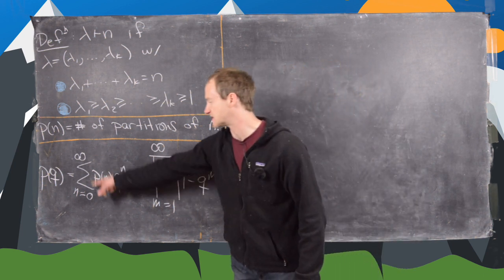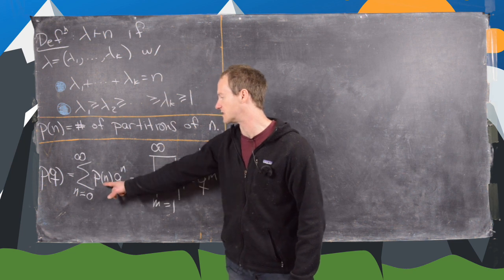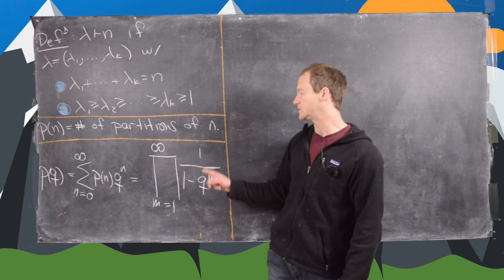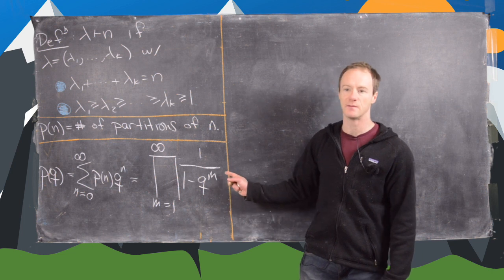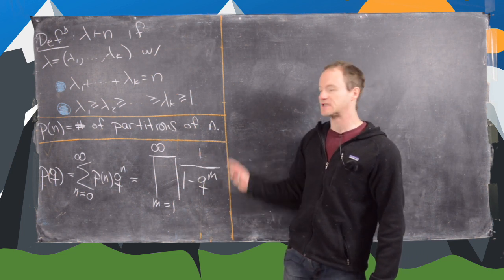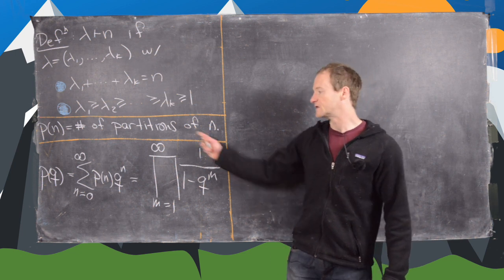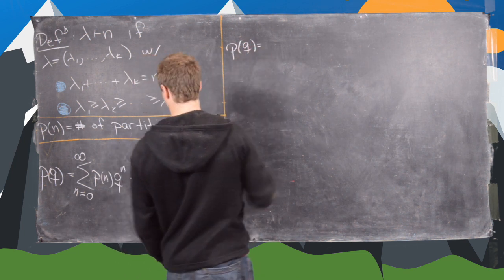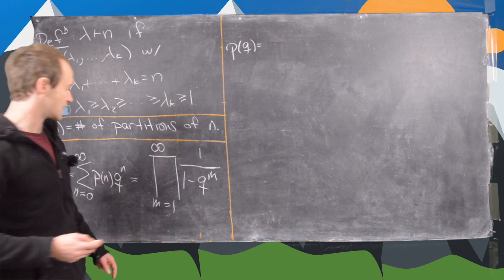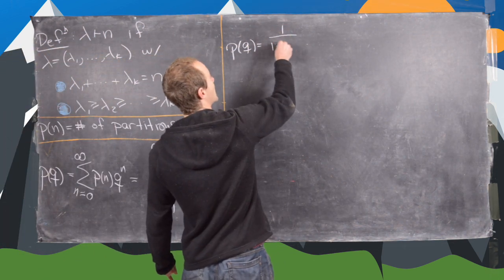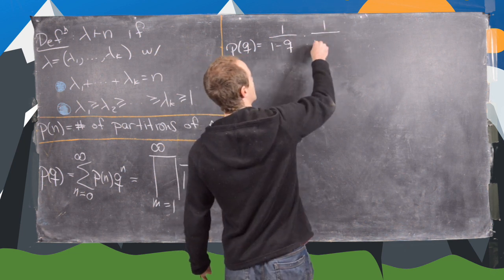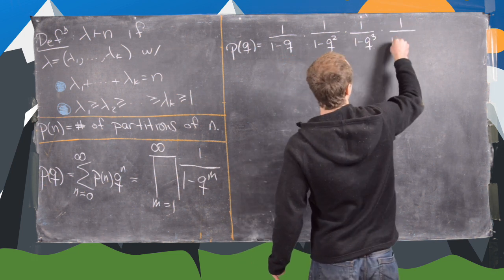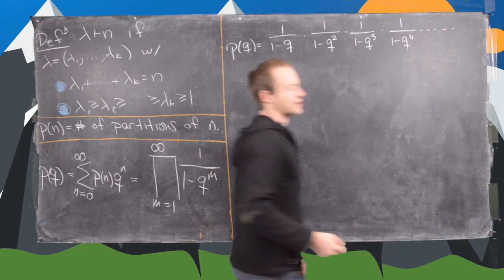So we have p(q) = the sum from n=0 to infinity of p(n) q^n, and that equals the infinite product from m=1 to infinity of 1/(1 - q^m), interpreted via a geometric series expansion. Let's write out that infinite product explicitly: 1/(1-q) times 1/(1-q²) times 1/(1-q³) times 1/(1-q⁴) and so on and so forth.